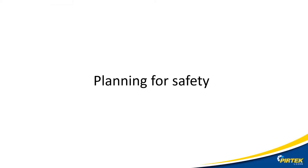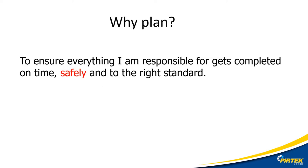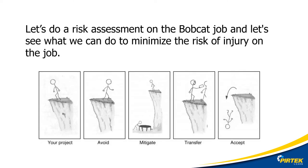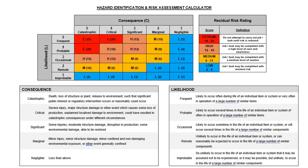Planning to work safely. Why plan? Let's look at our standard response: to ensure everything I'm responsible for gets completed on time, safely and to the right standard. Let's have a look at safety. Things can go wrong — we need to plan for the worst case scenario. Let's start a risk assessment on the Bobcat hose repair job. We'll be using the Pertec risk assessment template that you can download from P-Connect or PMoodle.